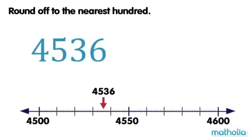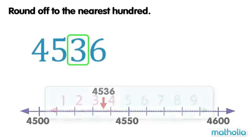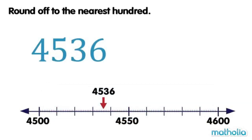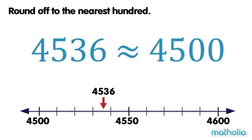Let's round off 4536 to the nearest 100. When rounding to the nearest 100, we look at the digit in the tens place. The digit in the tens place is 3. Digits that are 4 or less are rounded down. So, 4536 is rounded down to 4,500. To the nearest 100, 4536 is approximately equal to 4,500.